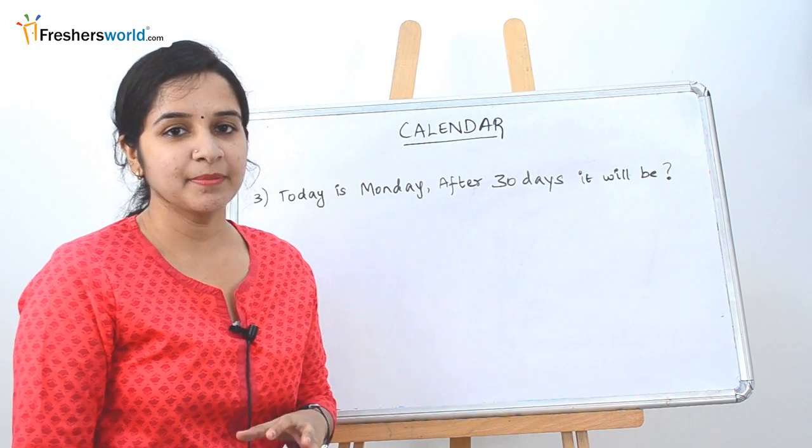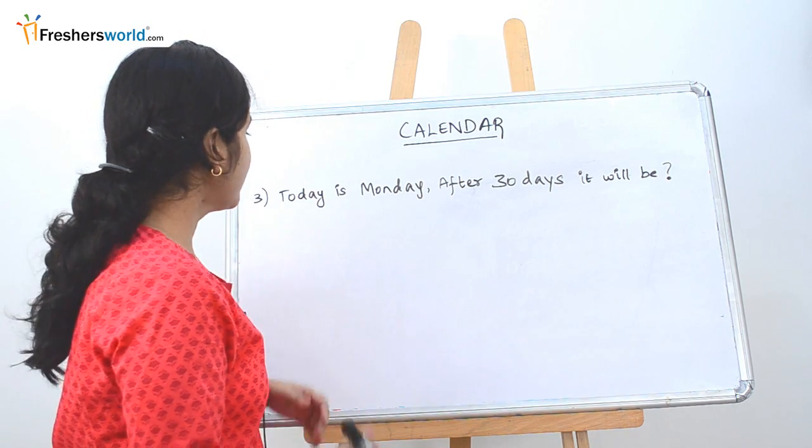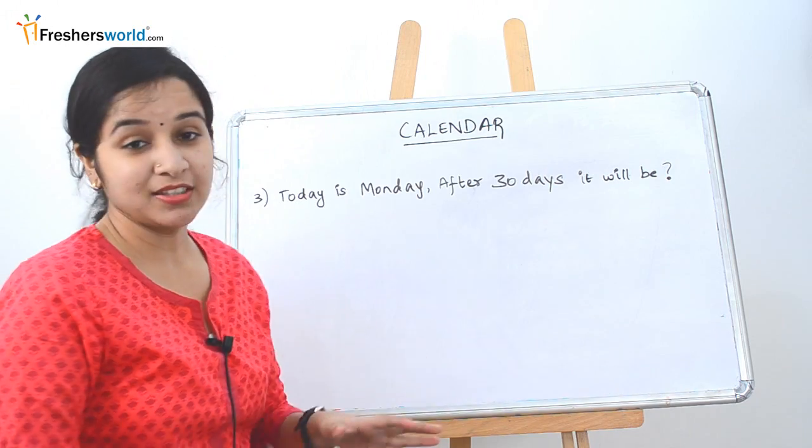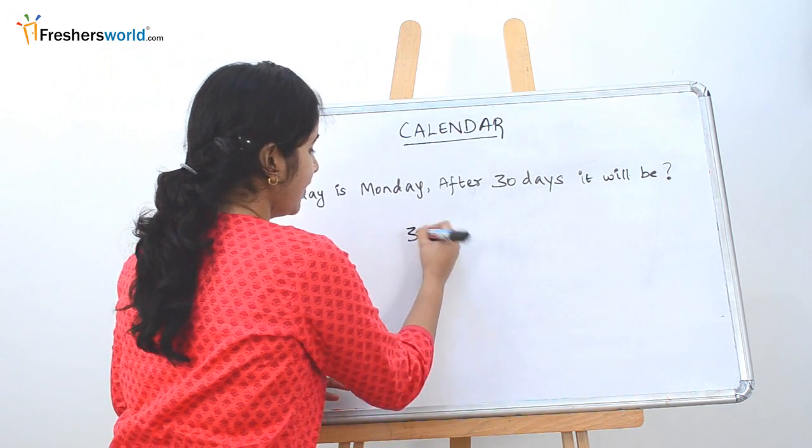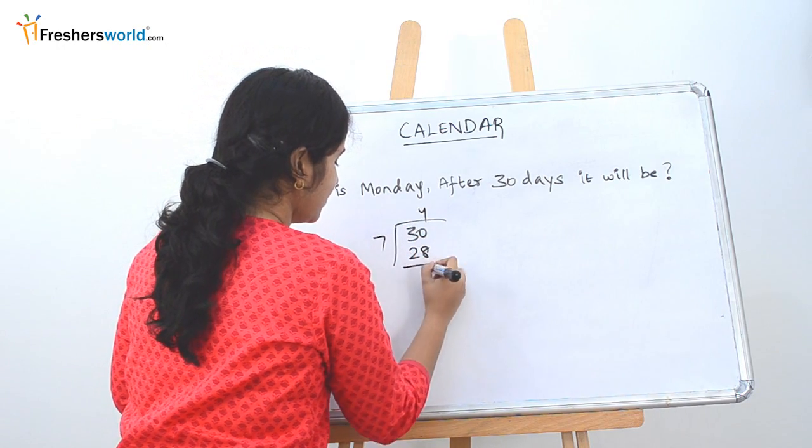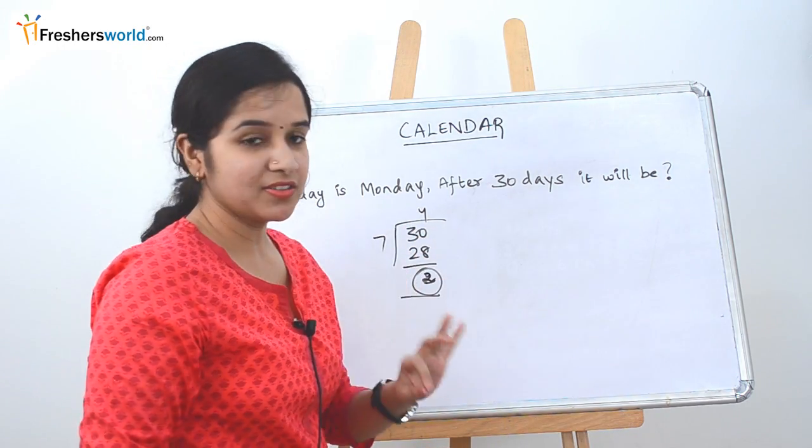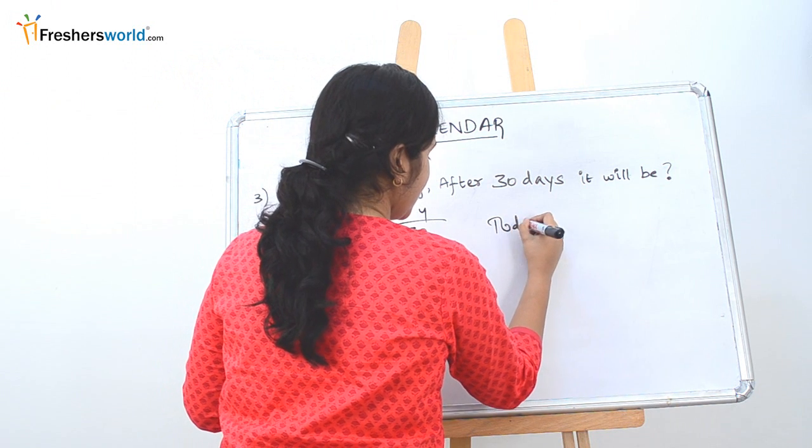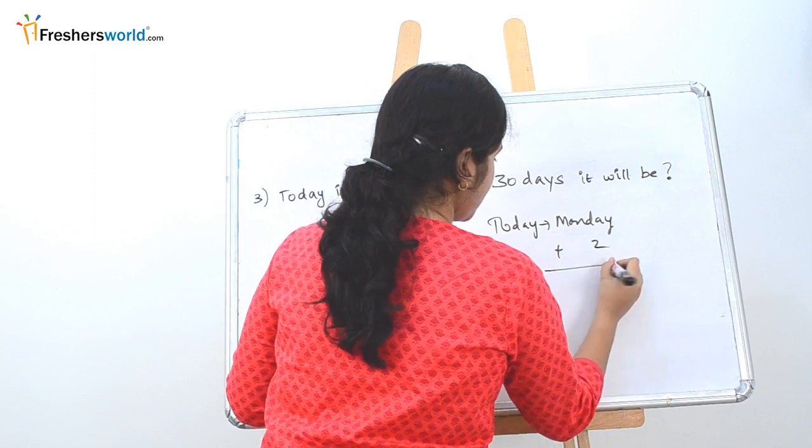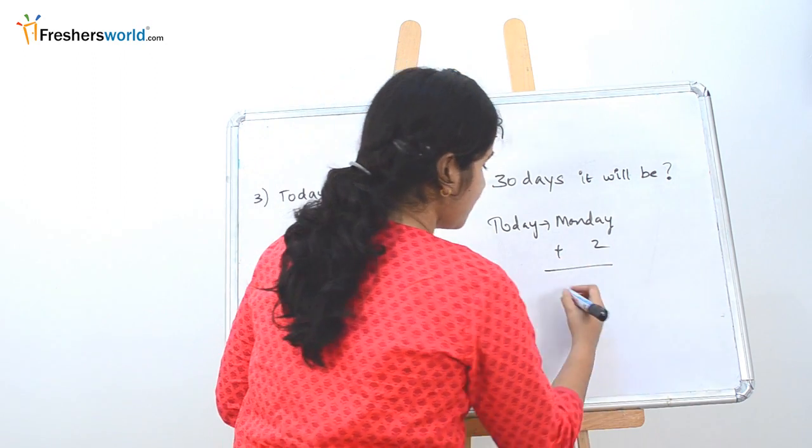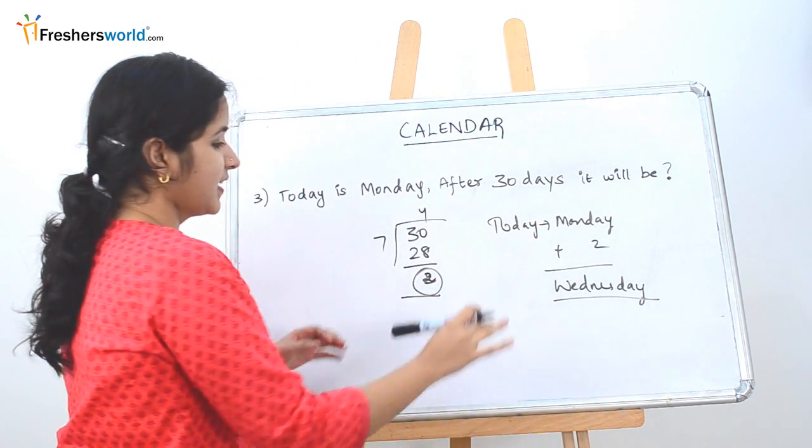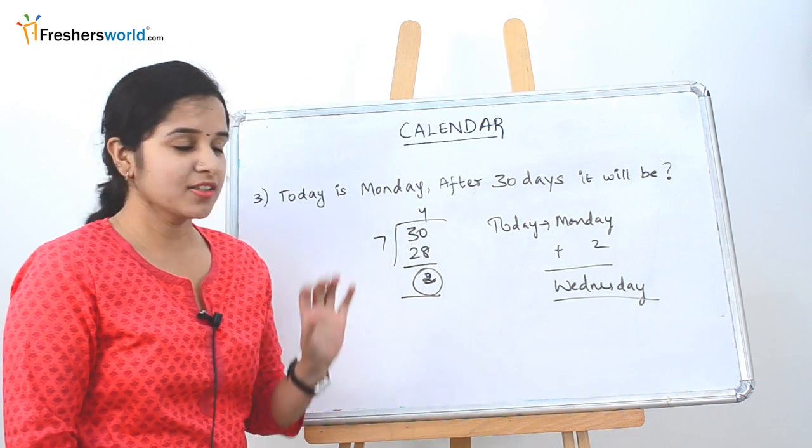Let's solve another sum. So the next sum is a very simple sum. So what is the question? Today is Monday. After 30 days, what day it will be? So it's very simple that they have given 30 days. You know how to find a day. It's nothing but divided by 7. 7 4s are 28. So 2. So the reminder is 2. So today is Monday. So add plus 2. So the next day is Tuesday. Then it's Wednesday. So after 30 days, it will be Wednesday. This is how you have to solve this sum.